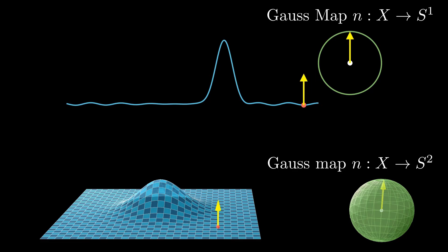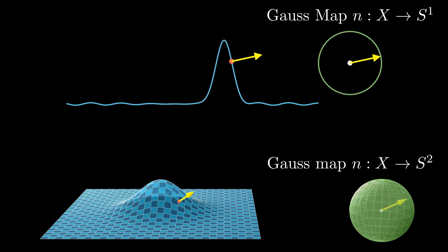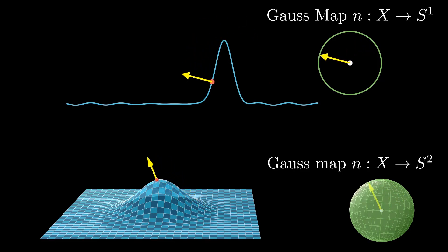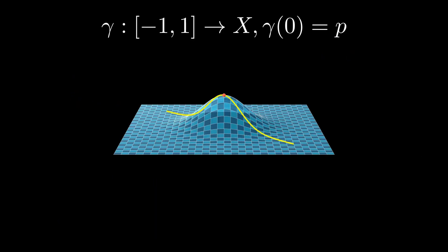At points of high curvature, the normal vector changes direction fast, while at points of low curvature, it changes more slowly. This suggests that curvature is related to the rate of change of the Gauss map. Since we are dealing with functions on curves or surfaces, we cannot use ordinary derivatives. Instead, we use directional derivatives.